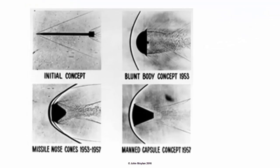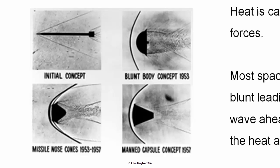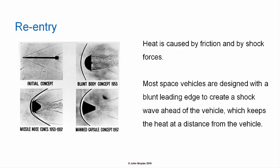The initial concept for re-entry vehicles was essentially a rocket shape. The second idea was a blunt body concept with a rounded front, where the shockwave is moved some distance away from the nose of the vehicle. The final diagrams show refinements of these designs, including the classic shape of a manned capsule as used today. Most space vehicles are designed with a blunt leading edge to create a shockwave ahead of the vehicle.